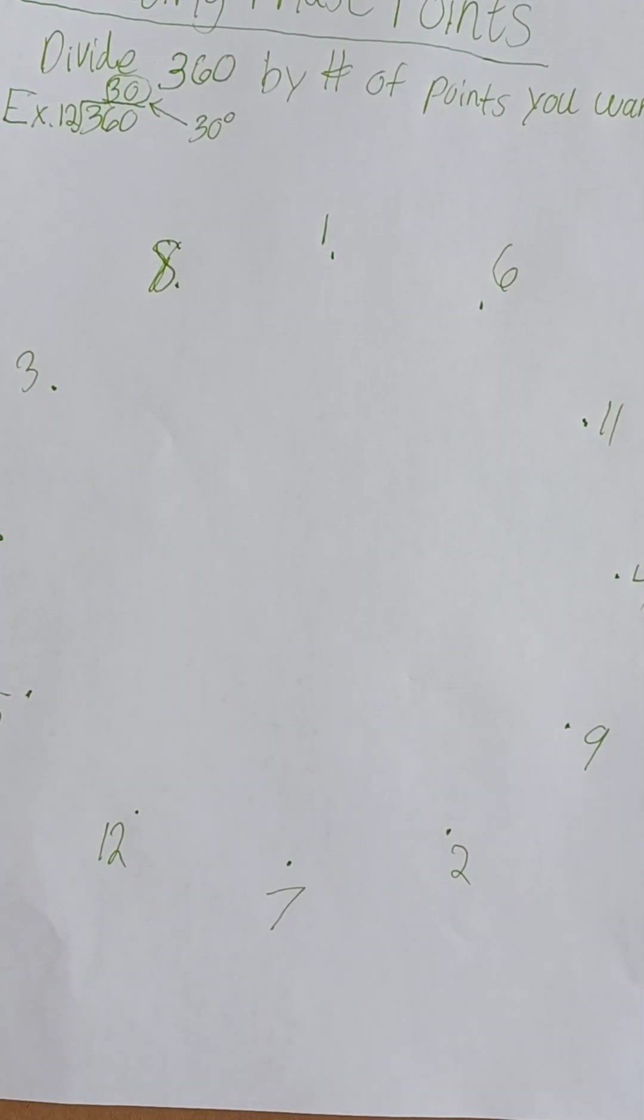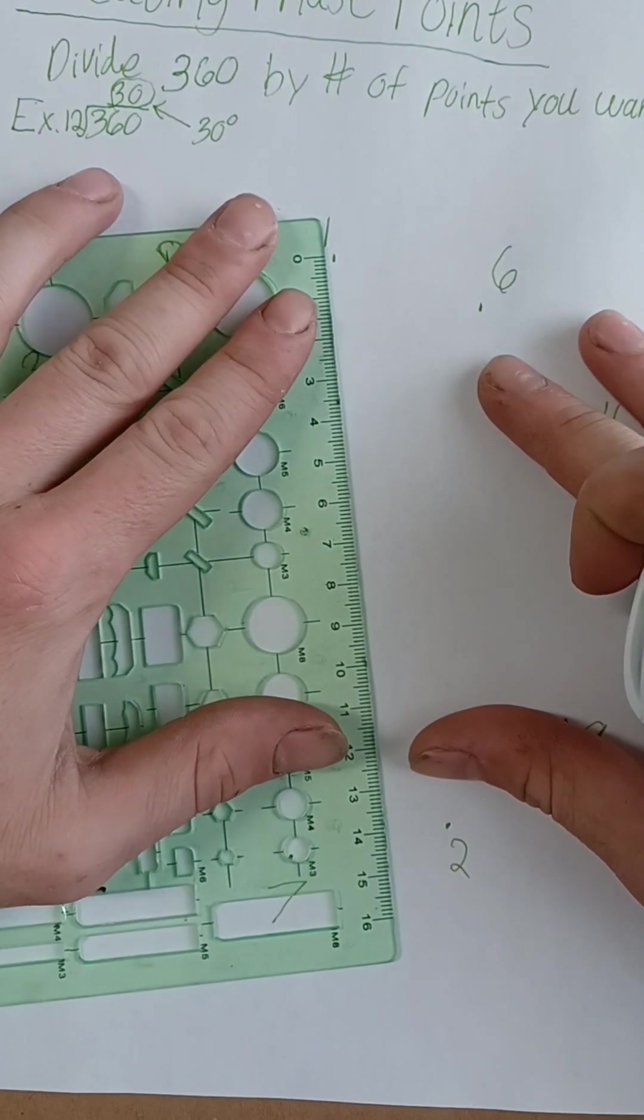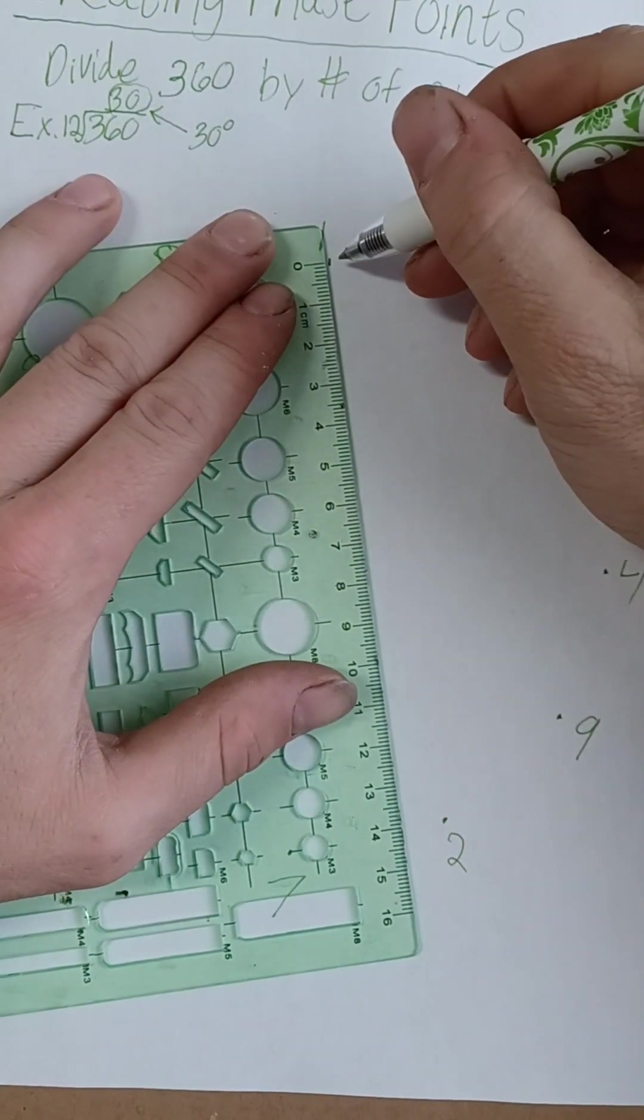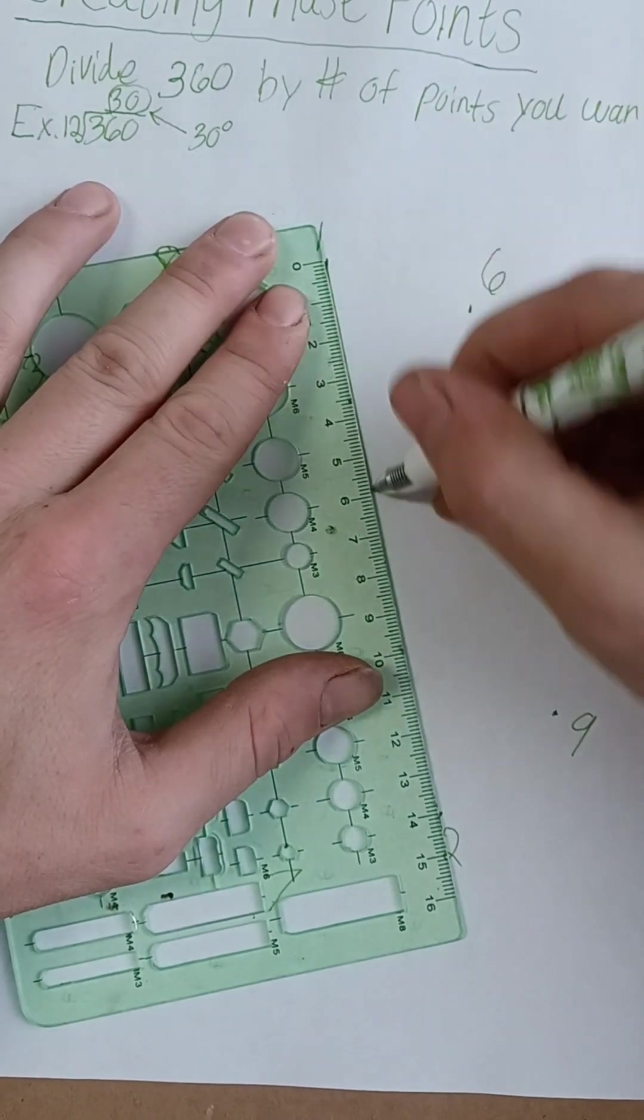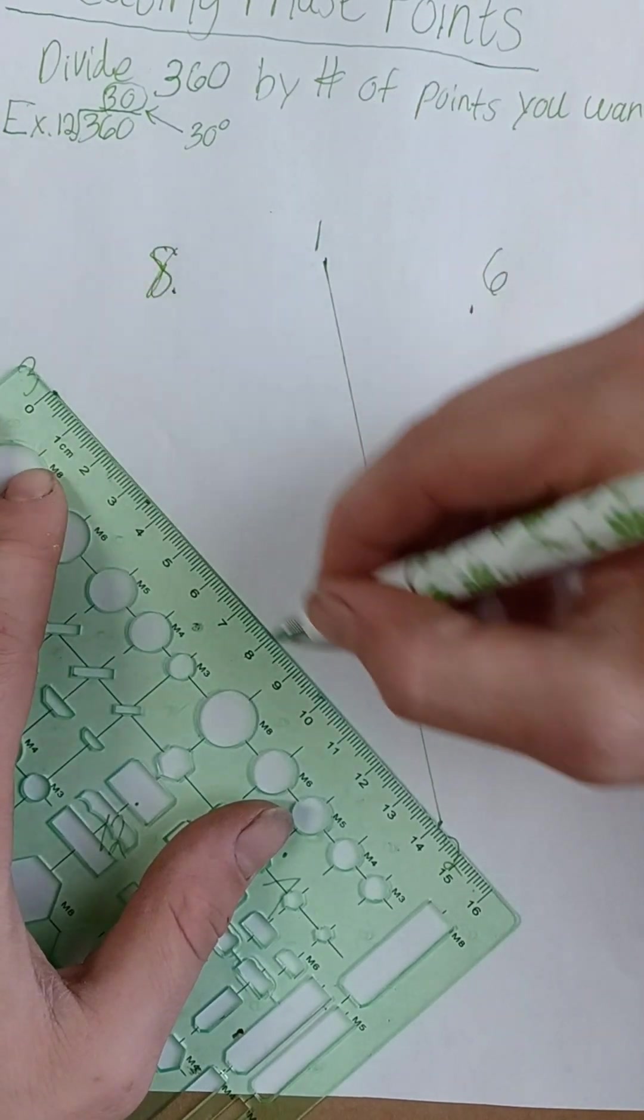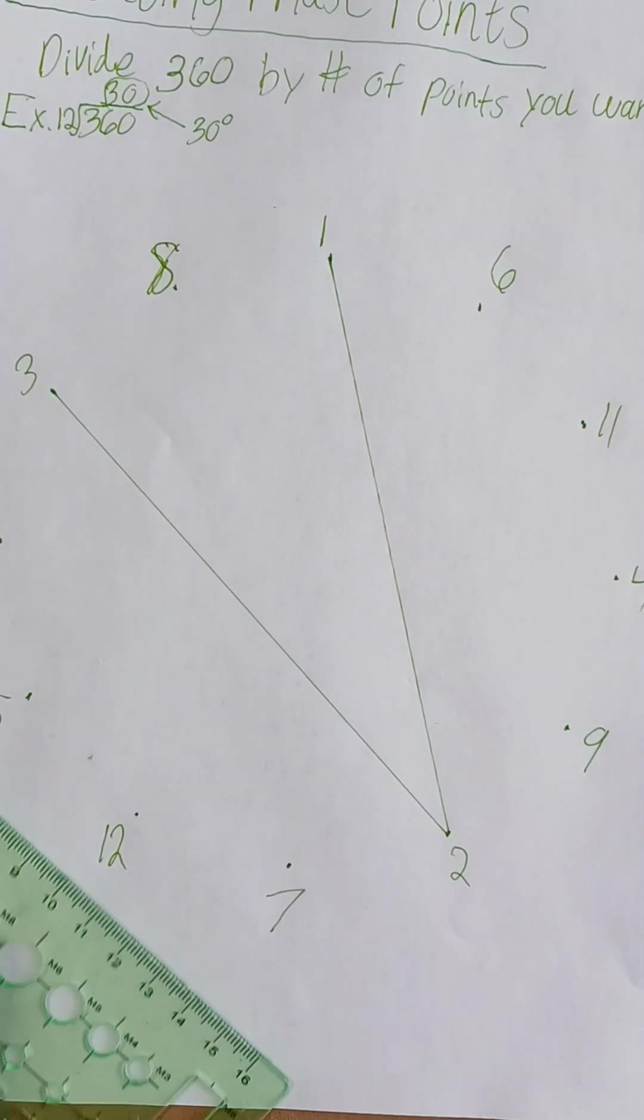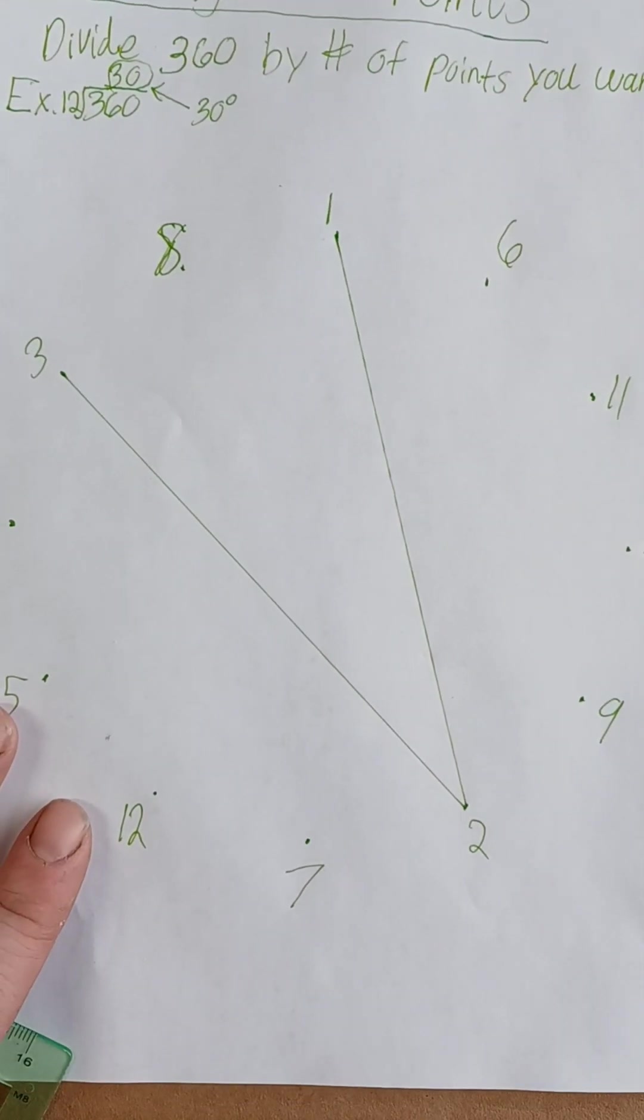Now all we want to do for the next part is take a little stencil or a ruler of some kind. And you can simply start going from point 1 to point 2. Go from 1, 2, 3, you go all the way to 12. Okay, so I'll complete that real quick and show you how it looks when I'm done.